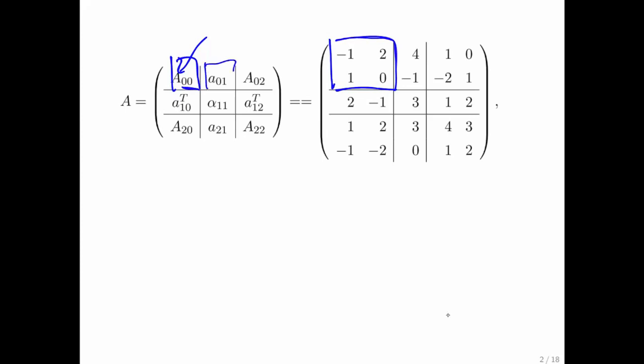To its right is a vector because it's part of a column, and so forth. Notice that the middle element here is just a scalar, so we use a Greek lowercase letter. And to its left and right are parts of the row. And therefore we use a lowercase letter and this transpose to indicate that it's a row vector.